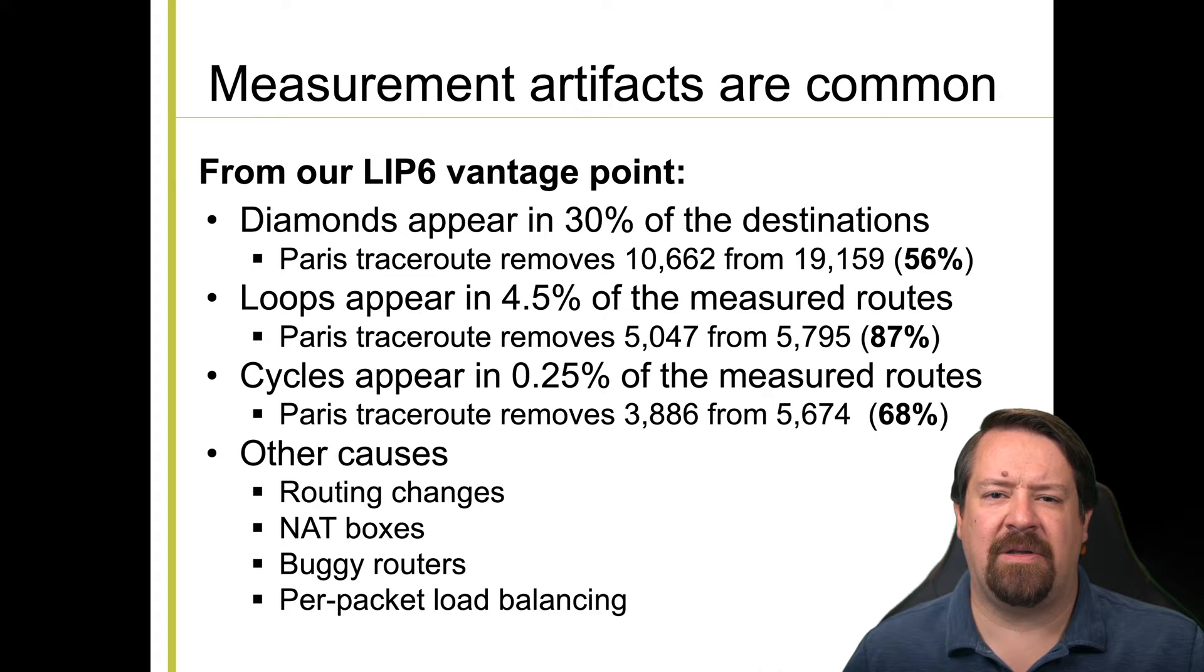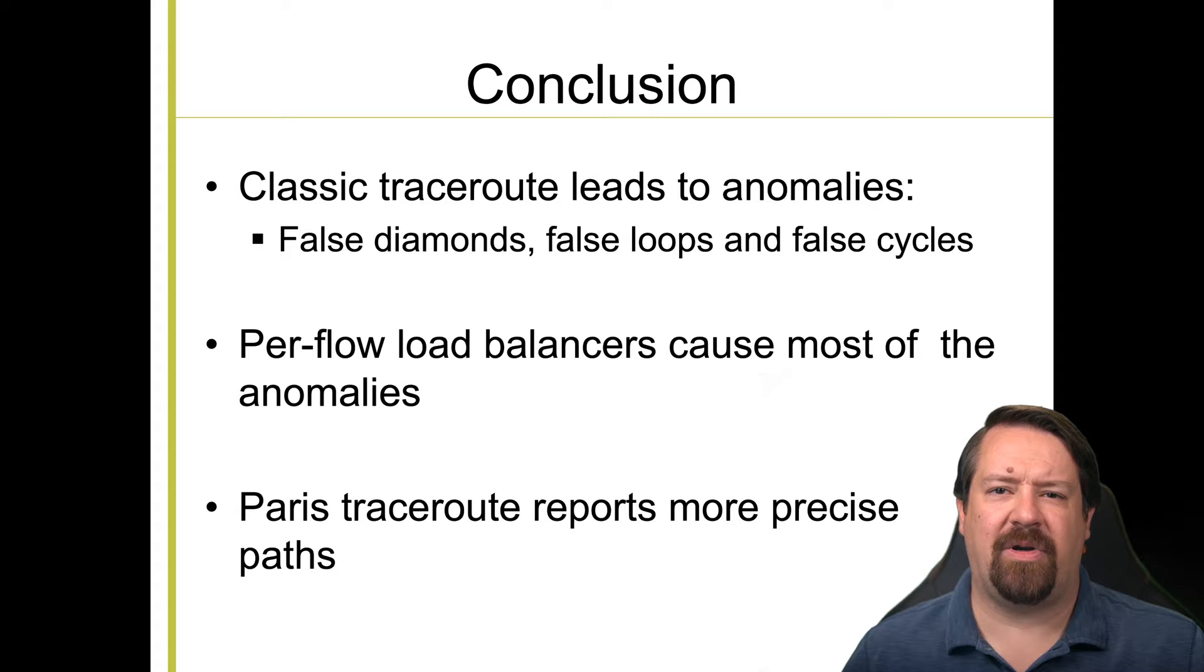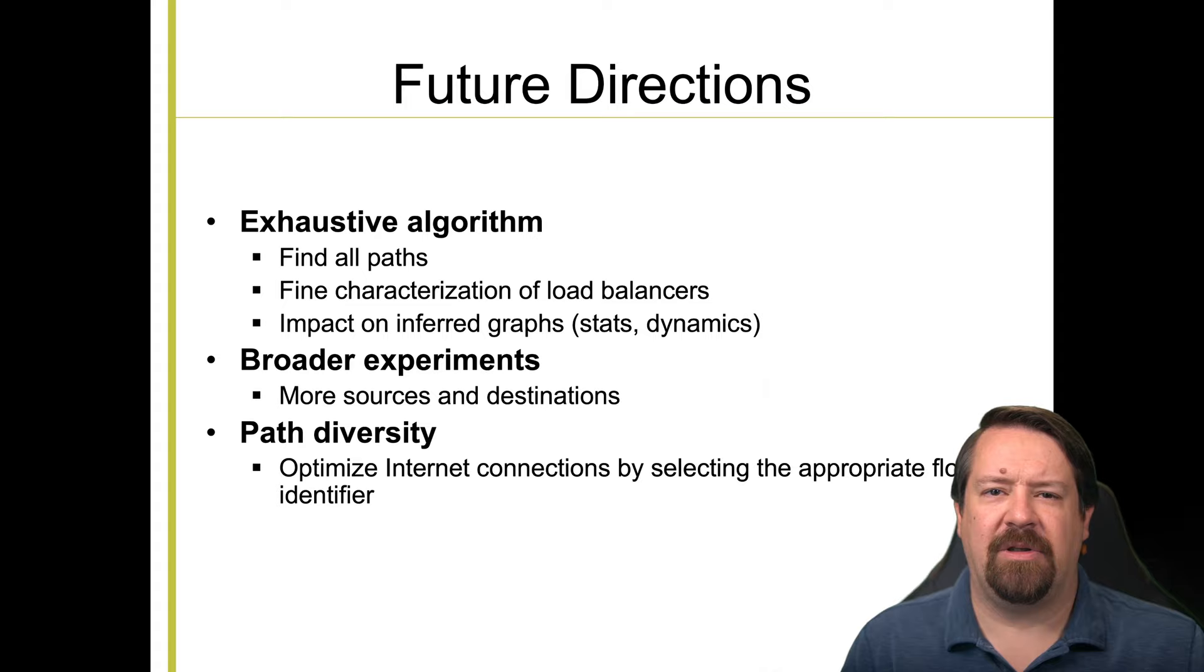So in conclusion, classic tracerout infers anomalies that don't actually exist in the network. And most of these are caused by per flow load balancing. Remember, we said the per flow load balancing is the majority of the load balancing because it's required for TCP to perform well. So the result is that Paris tracerout removes the majority of these anomalies, and so we can get a more accurate view of the network topology. With this tool in place, there's much more work to do on characterizing the internet, in particular the use of load balancing.